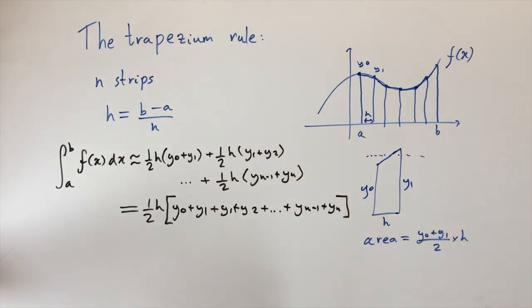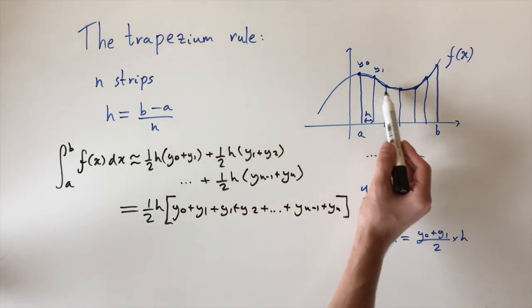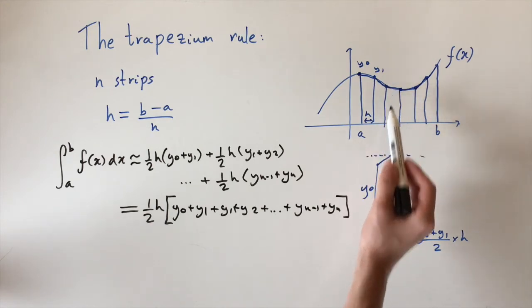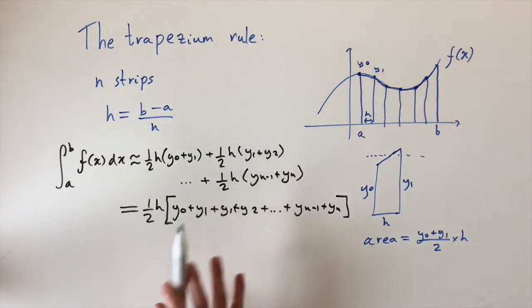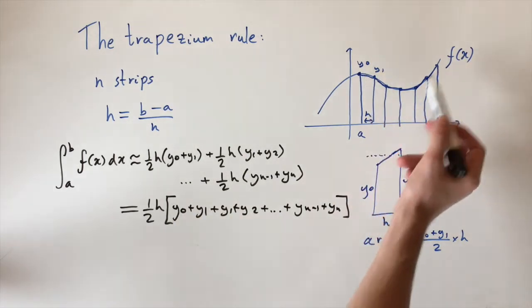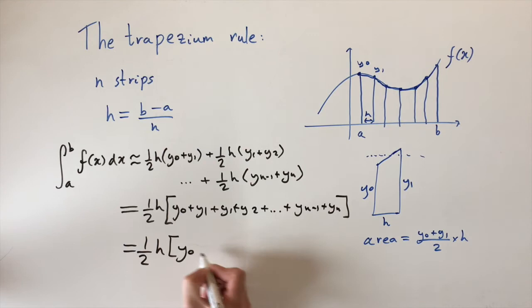What we notice now is that we actually have all the middle terms appear exactly twice. We have y1 and y1, so two factors of y1. We're going to have two factors of y2 because it appears in two trapeziums. It appears as the right point on this one and the left point on that one. So all the middle terms appear twice, but the end points, y0 and yn, they only appear once because they're only part of one trapezium.